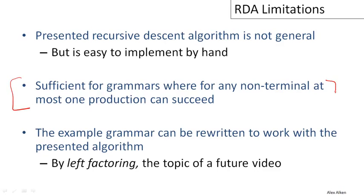In particular, it'll work for any grammar where, for any non-terminal, at most one production can succeed. If you know from the way that you've built your grammar that in any situation that the recursive descent algorithm can get into during parsing, that at most one production can succeed, then this parsing strategy will be sufficient, because once you find a production that succeeds, there will never be a need to go back and revisit that decision, because it must be the case that none of the other productions could have succeeded.